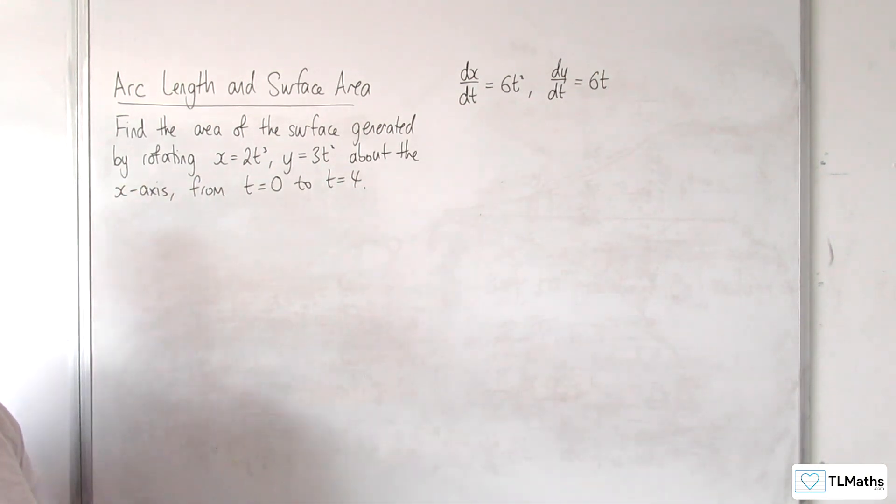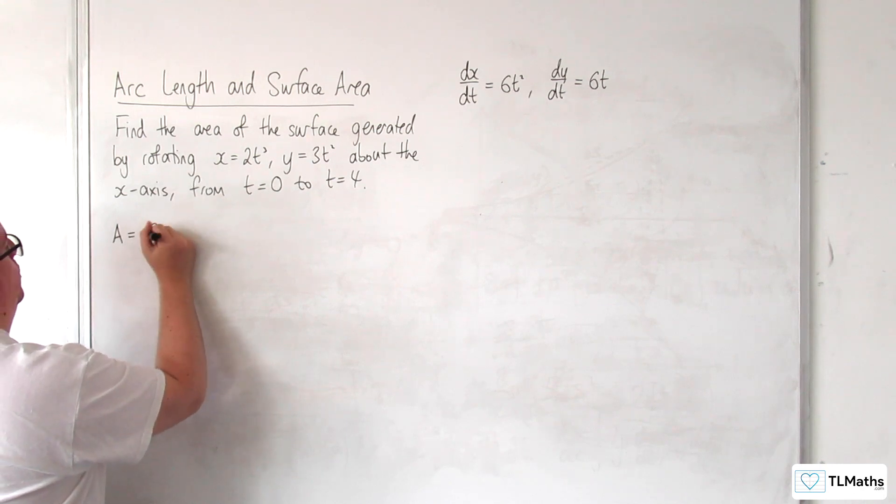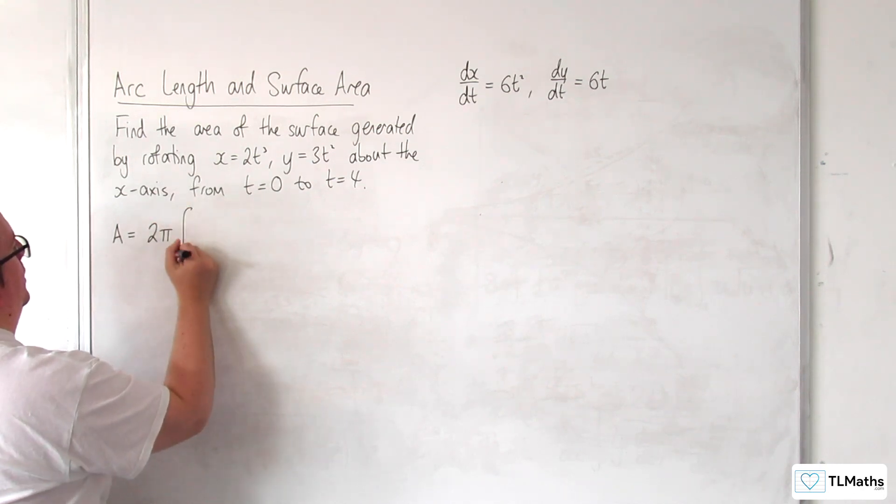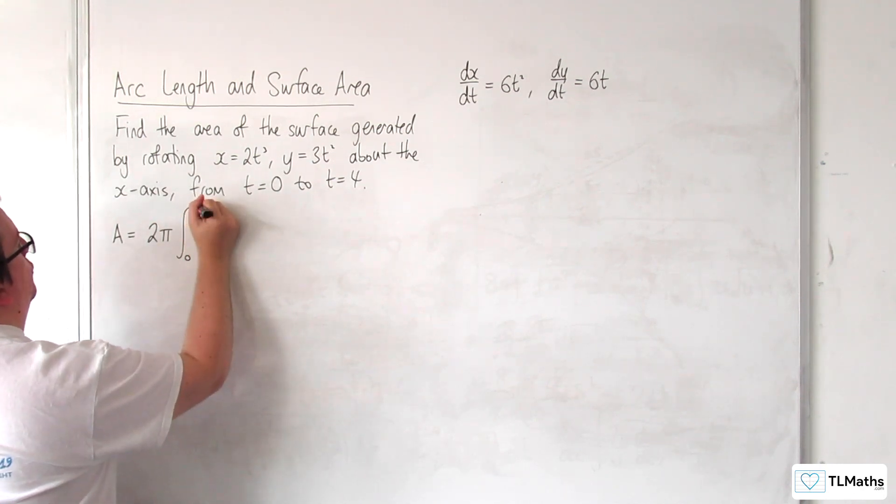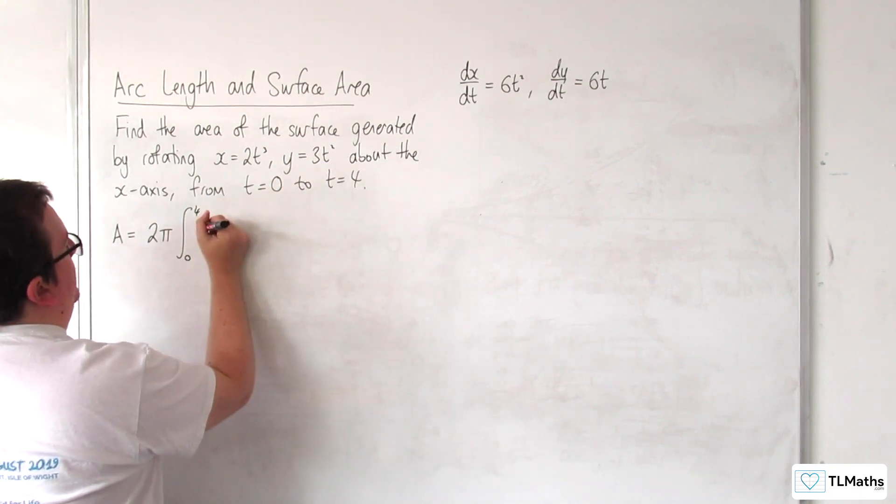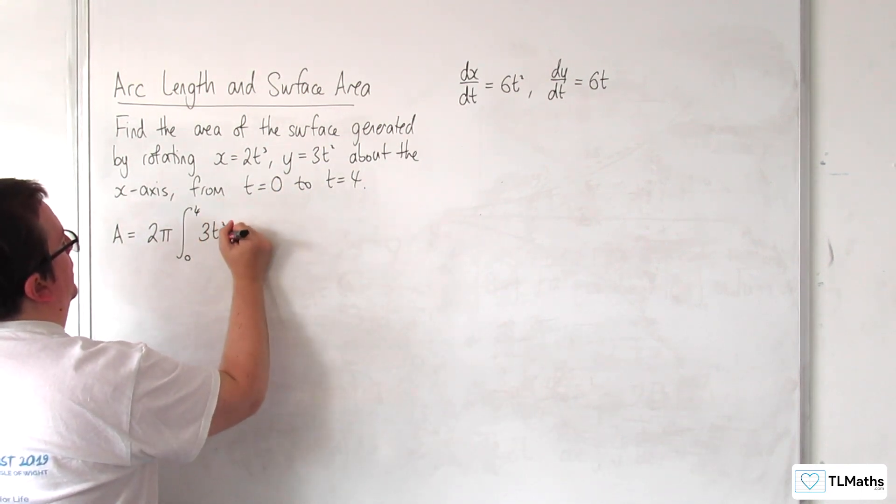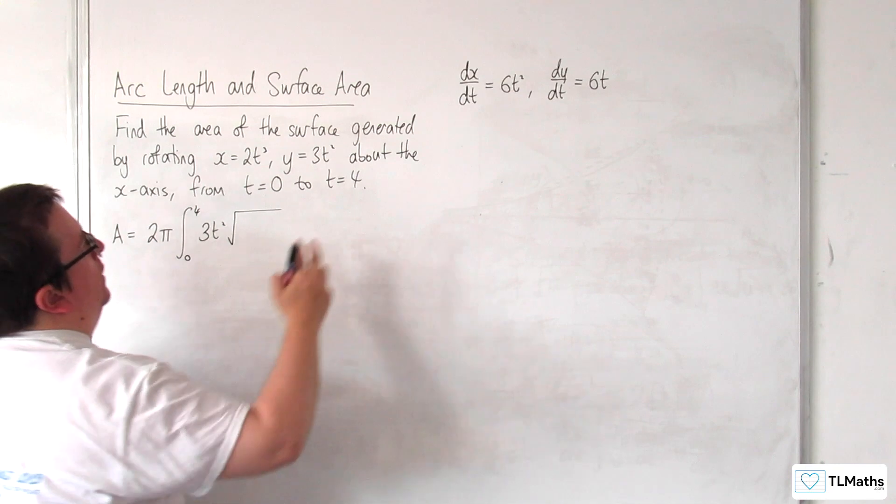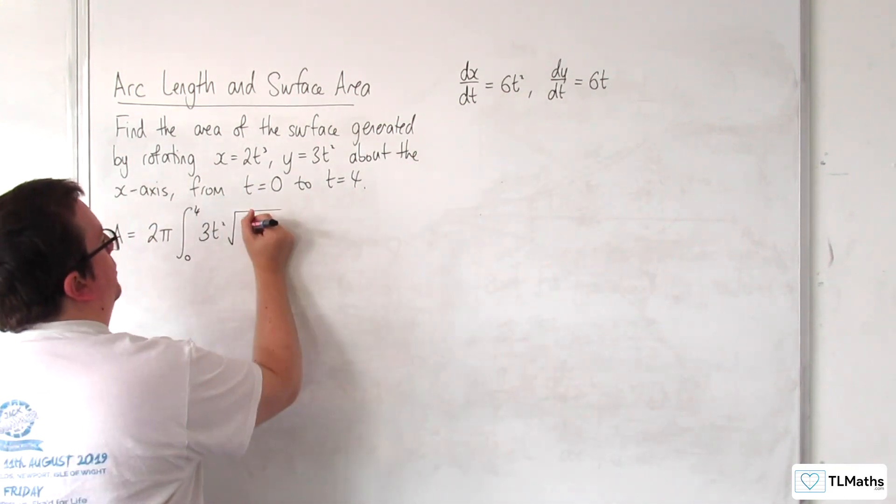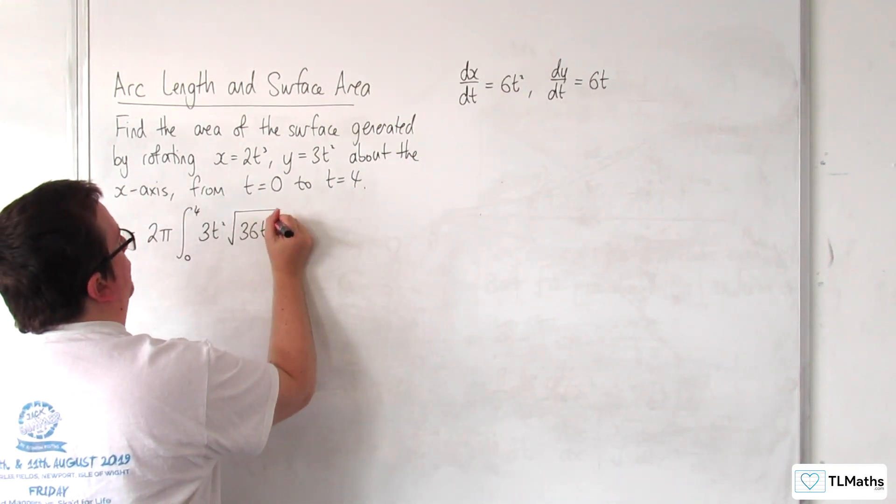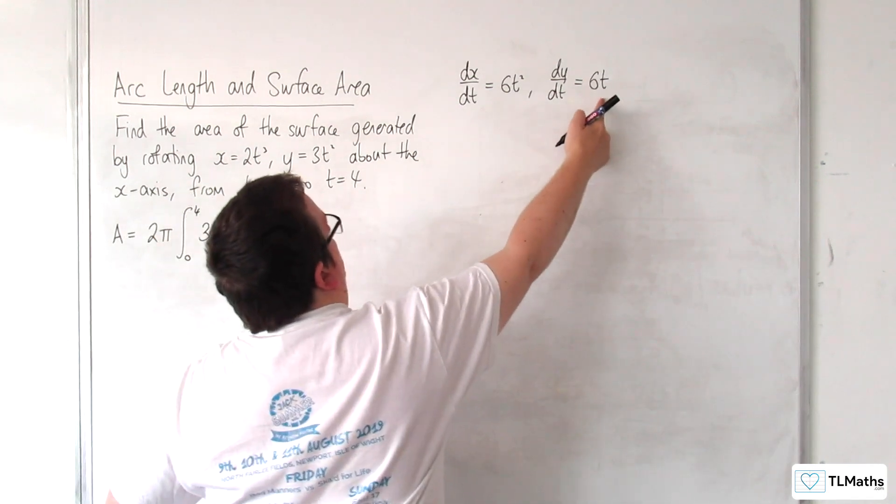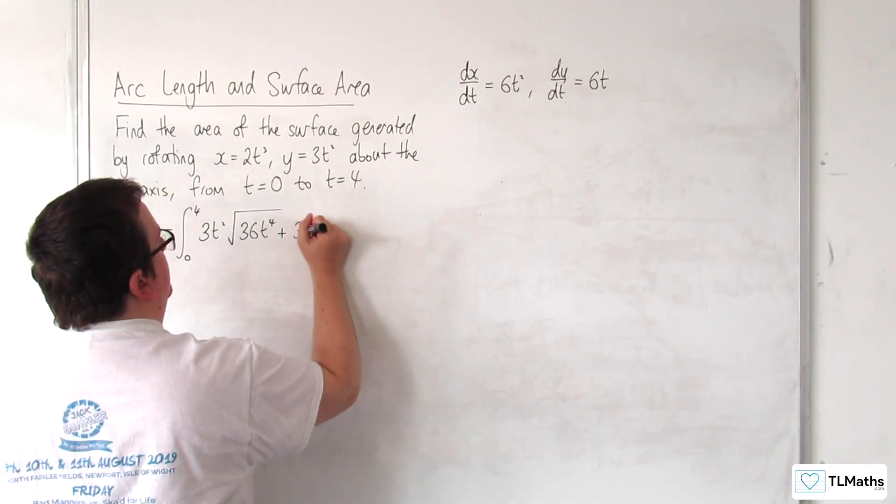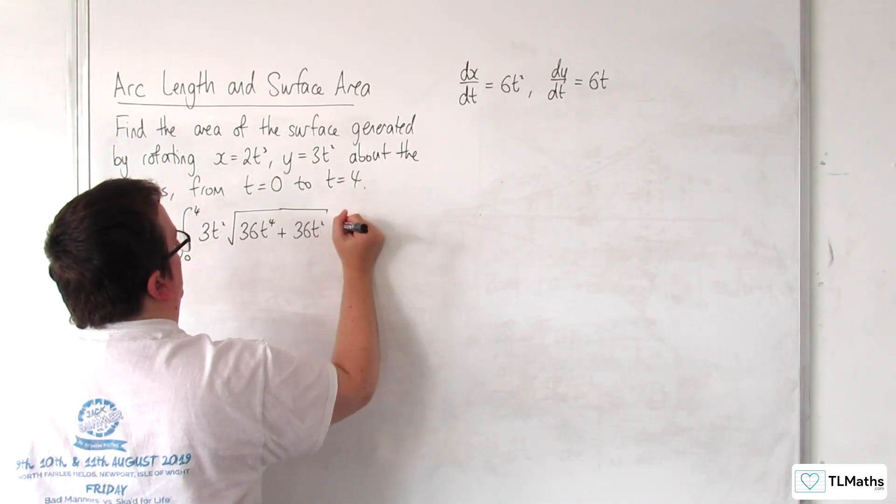Okay, so the area is going to be 2π times the integral between 0 and 4 of y, which is 3t squared, times by the square root of this squared, so 36t to the 4, plus this squared, so 36t squared, dt.